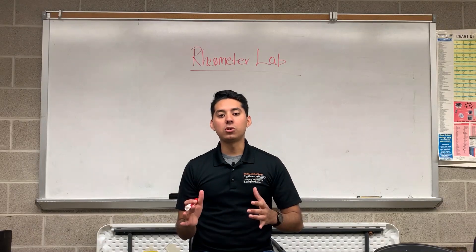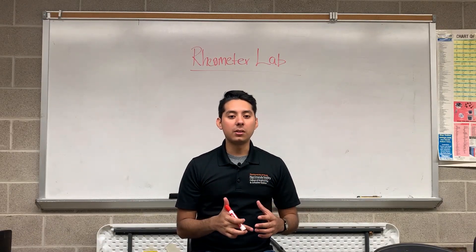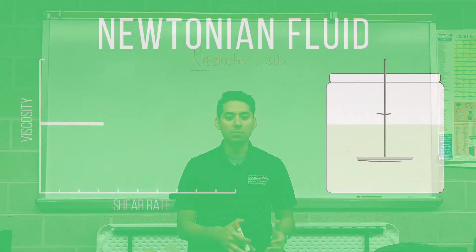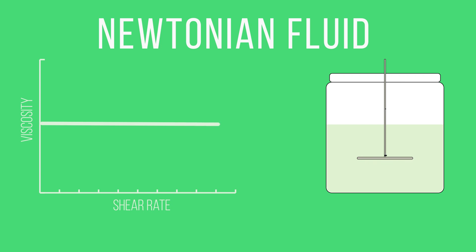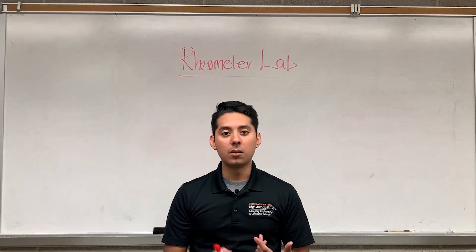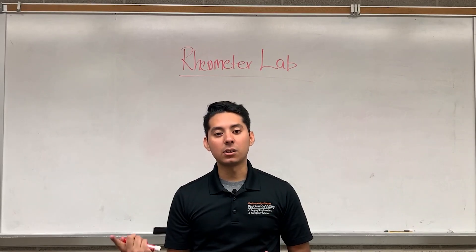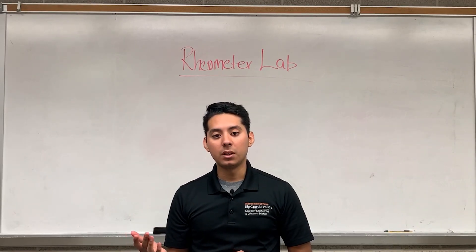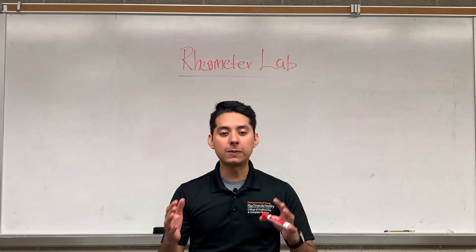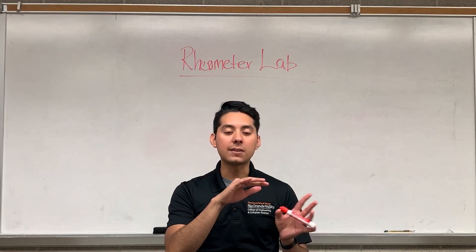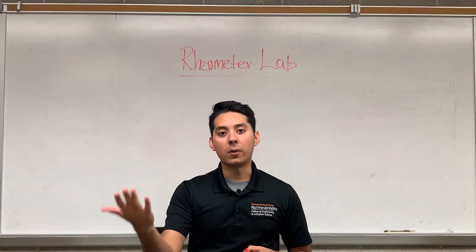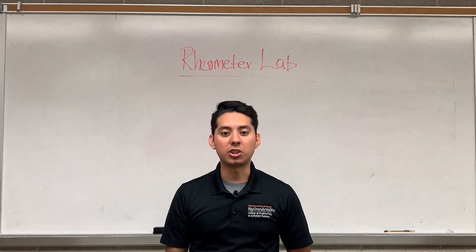According to Newton, when viscosity is constant — meaning independent of the shear rate — fluids that exhibit this property are classified as Newtonian. Typical examples of Newtonian fluids include water, motor oil, gasoline, and air, meaning these fluids will have the same constant viscosity no matter how much you increase the shear rate.